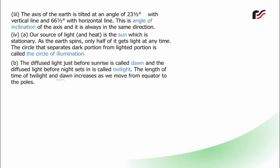The diffuse light just before sunrise is called dawn, and the diffuse light before night sets in is called twilight. The length of time of twilight and dawn increases as we move from the equator to the poles.